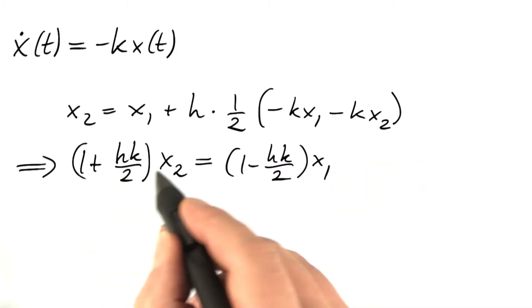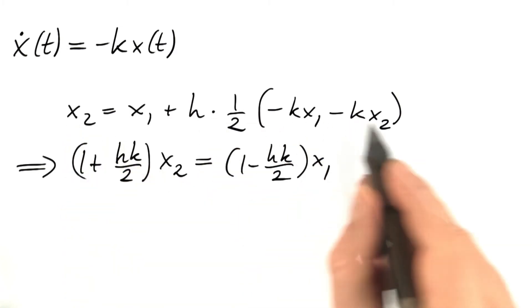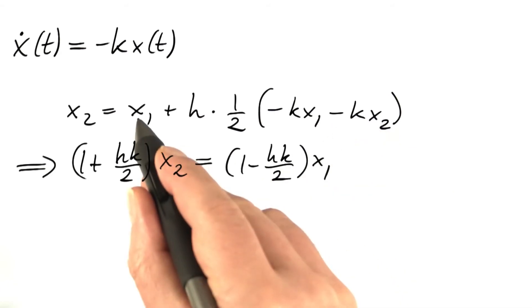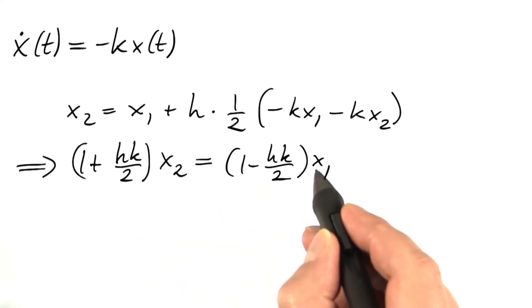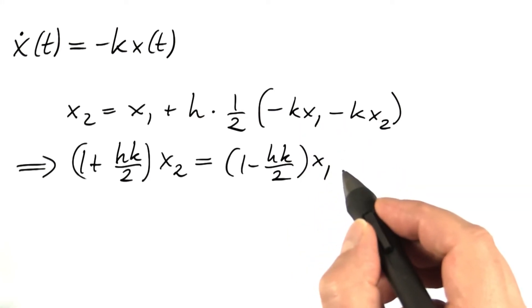Let's check that. 1x2 appears here, hk over 2x2 appears on the right-hand side with a minus sign. 1x1 appears here, minus hk over 2x1 minus hk over 2x1 appears here, correct?